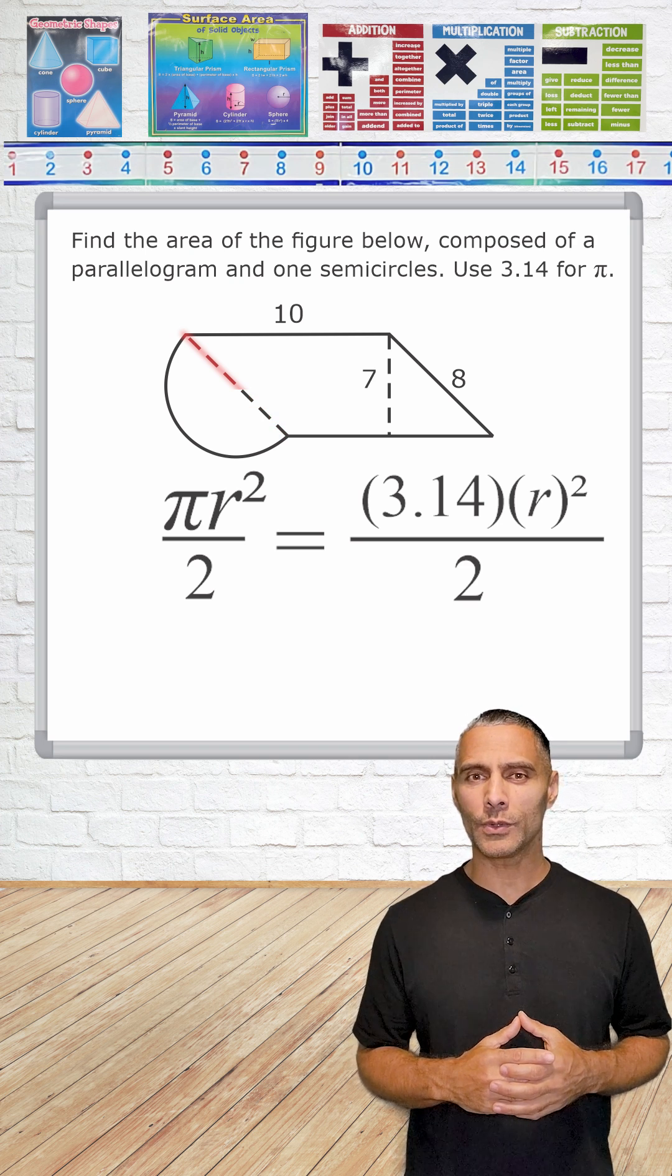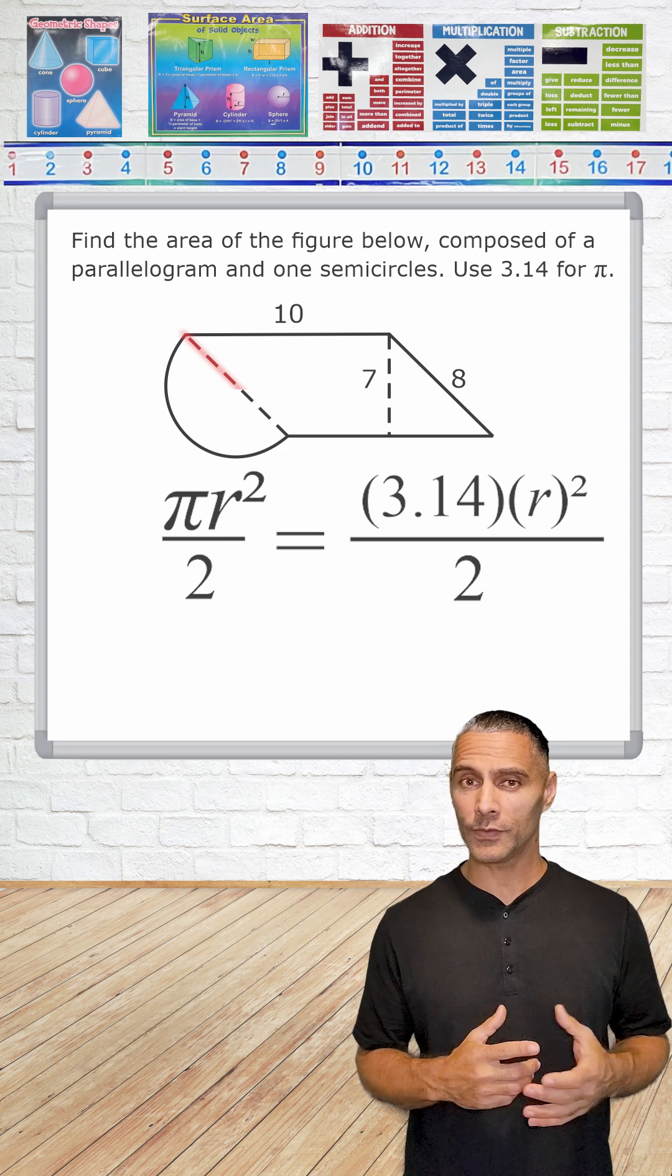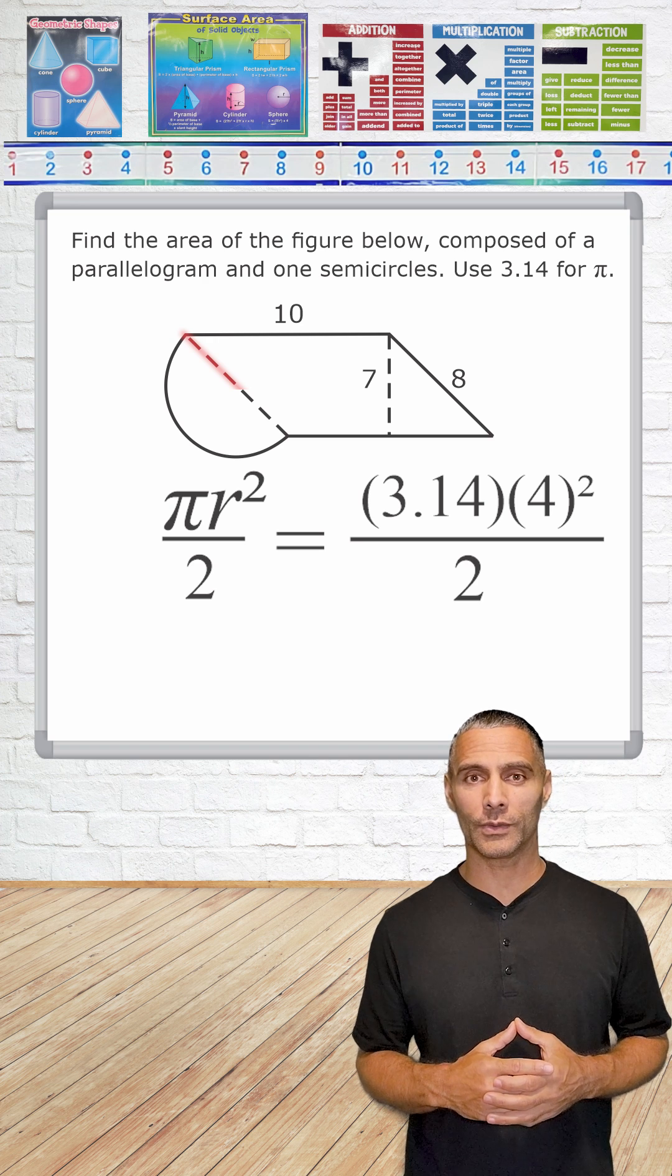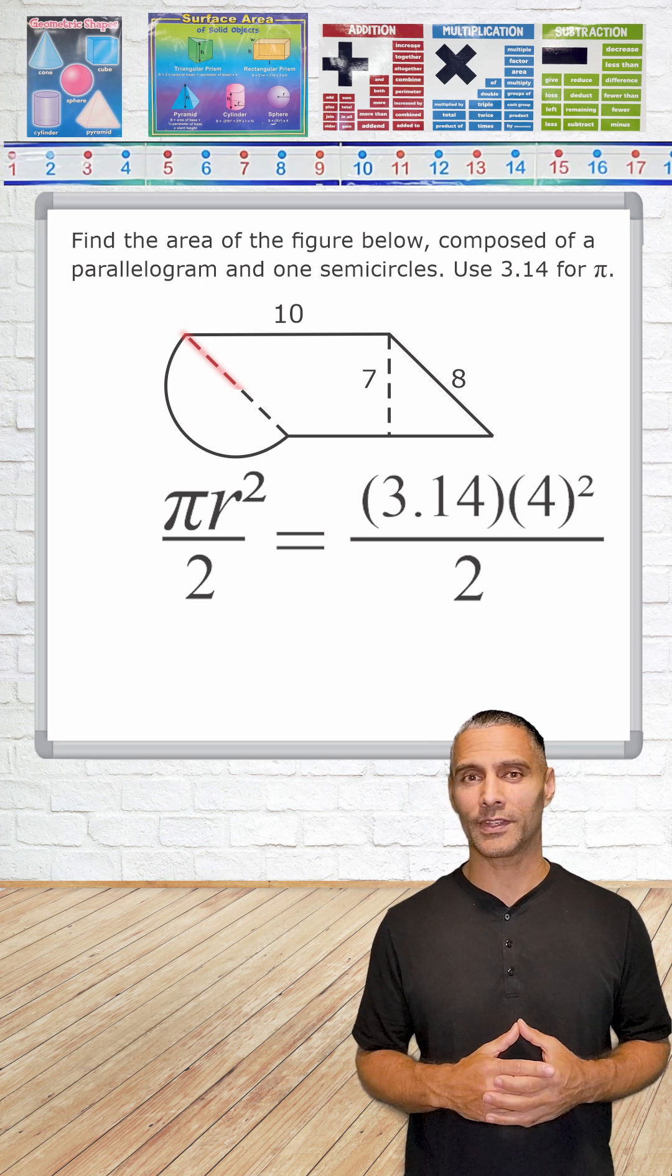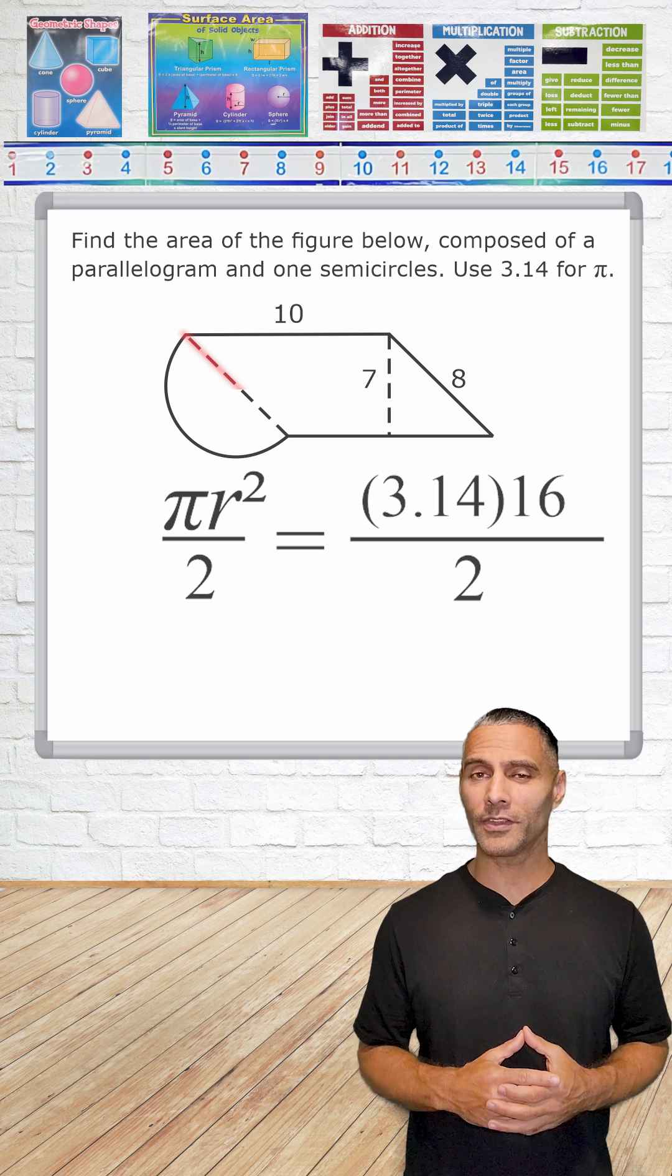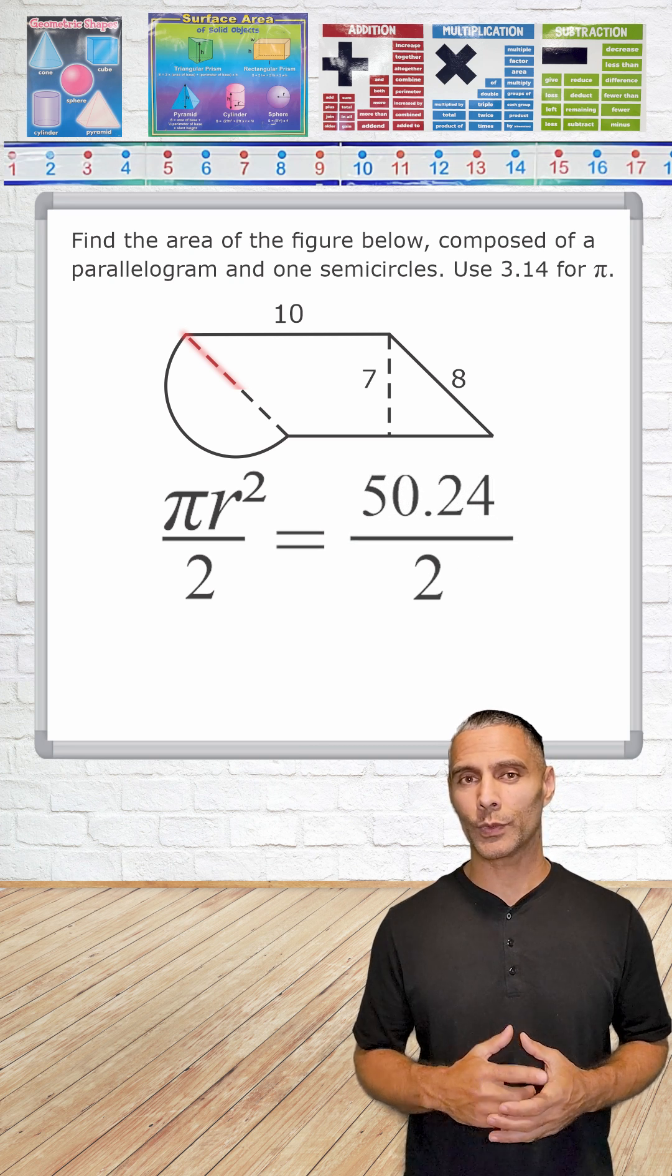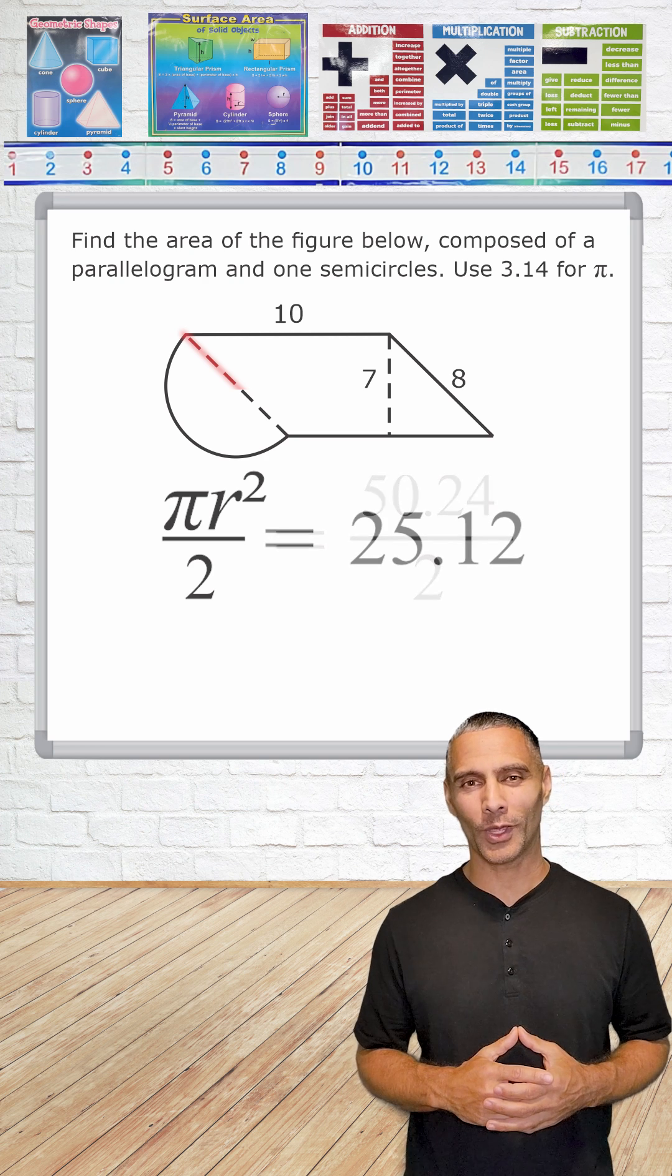Now what we're going to do is substitute r in with our equation, which is 4. So now that we have all of our important numbers, we take that 4 and square it, which gives us 16. Then we multiply by pi, which gives us 50.24. Now remember we're dealing with the semicircle, so we cut that in half to get 25.12.